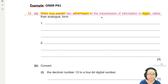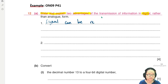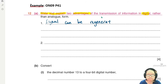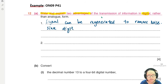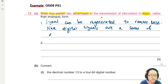Advantage one: the signal can be regenerated. Don't use the word 'filter' — use the word 'regenerated'. We remove the noise, so digital signals are a series of discrete numbers and the noise can be removed and the signal regenerated.